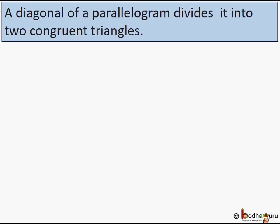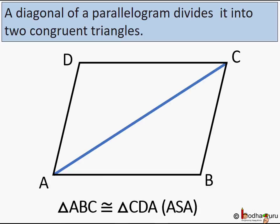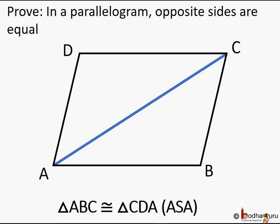Hello friends. In our previous lesson we proved that a diagonal of a parallelogram divides it into two congruent triangles. For example, diagonal AC divides parallelogram ABCD into two congruent triangles — triangle ABC and triangle CDA are congruent. We know that corresponding sides and angles of congruent triangles are equal.